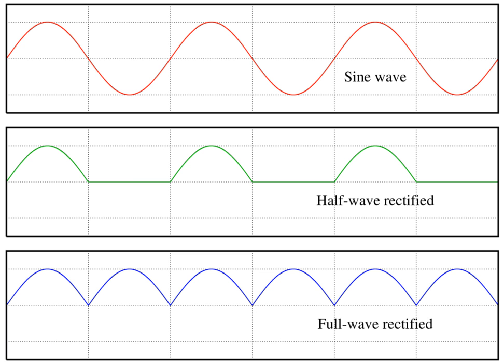A shock wave is a type of propagating disturbance. When a wave moves faster than the local speed of sound in a fluid, it is a shock wave. Like an ordinary wave, a shock wave carries energy and can propagate through a medium; however, it is characterized by an abrupt, nearly discontinuous change in pressure, temperature and density of the medium.